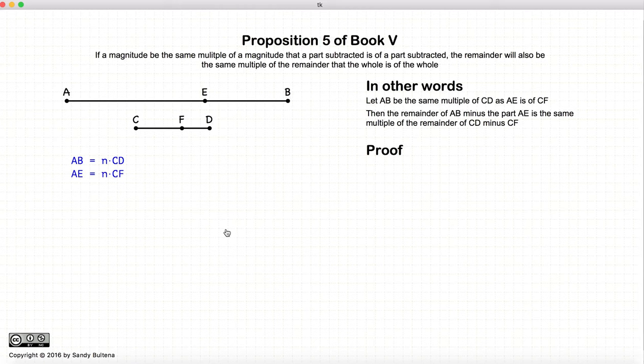So let's show this proof. Here we have our starting conditions. Now we're going to create a line GC such that EB is going to be the same multiple N times GC. So we create this line GC so that this equation holds true.